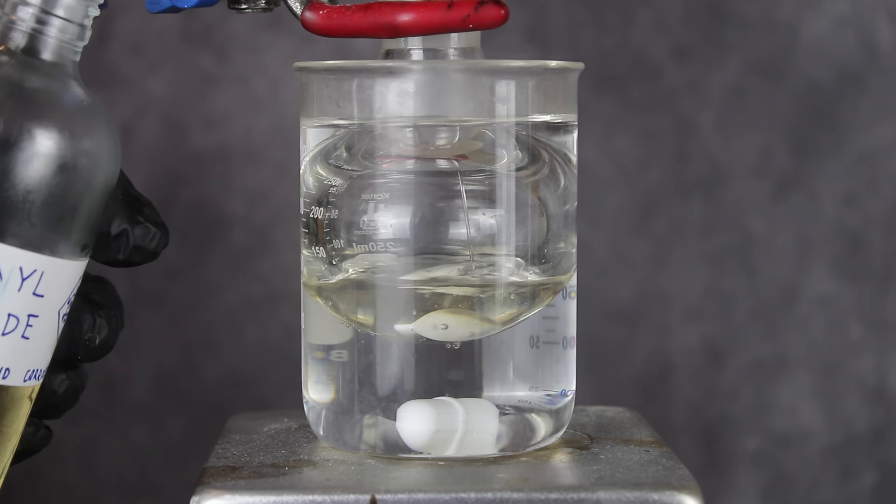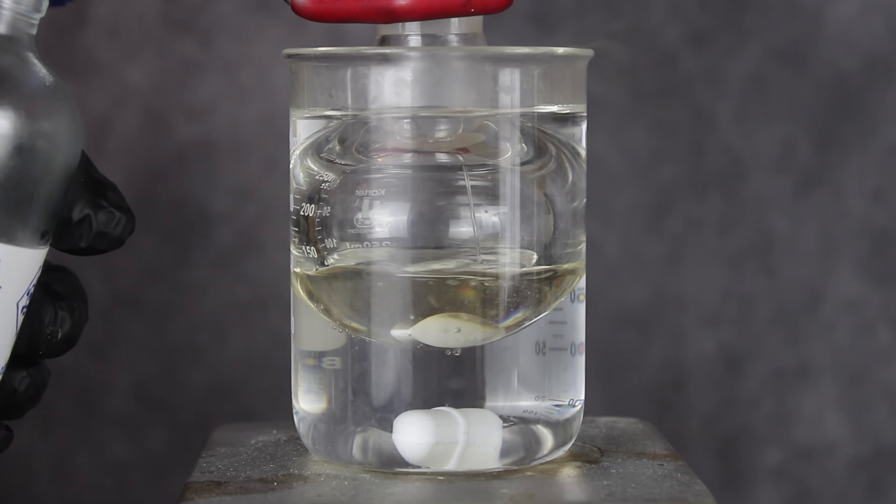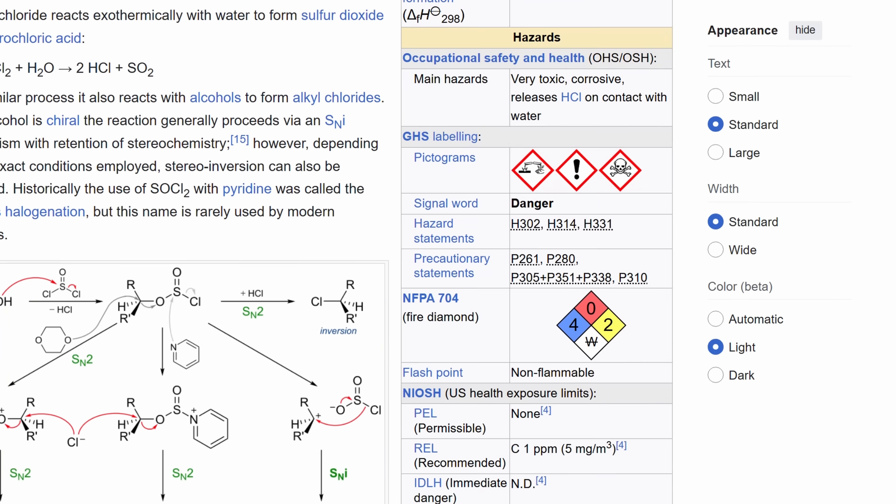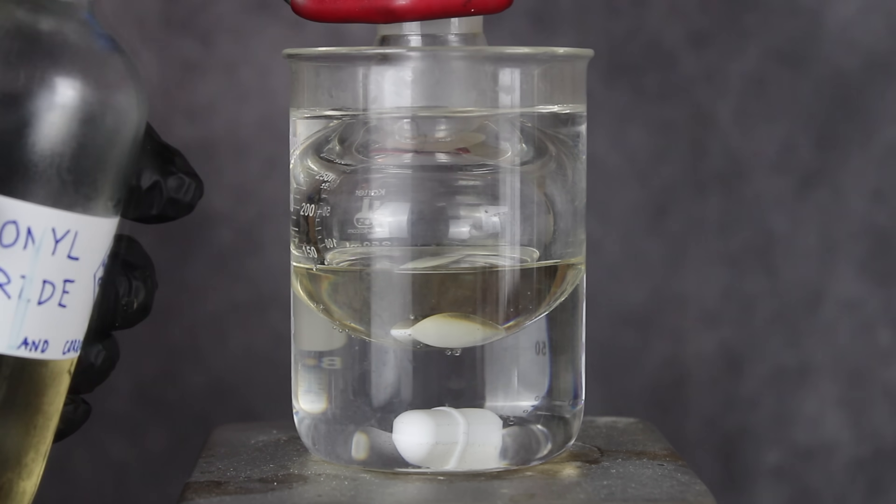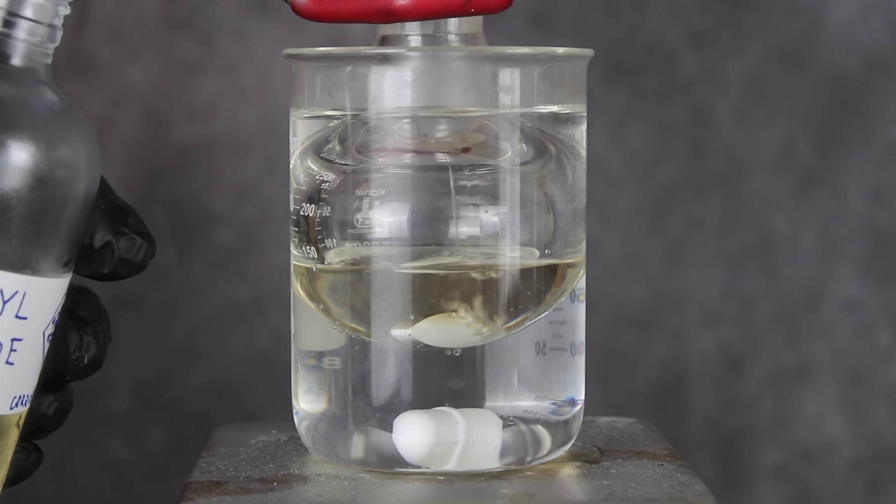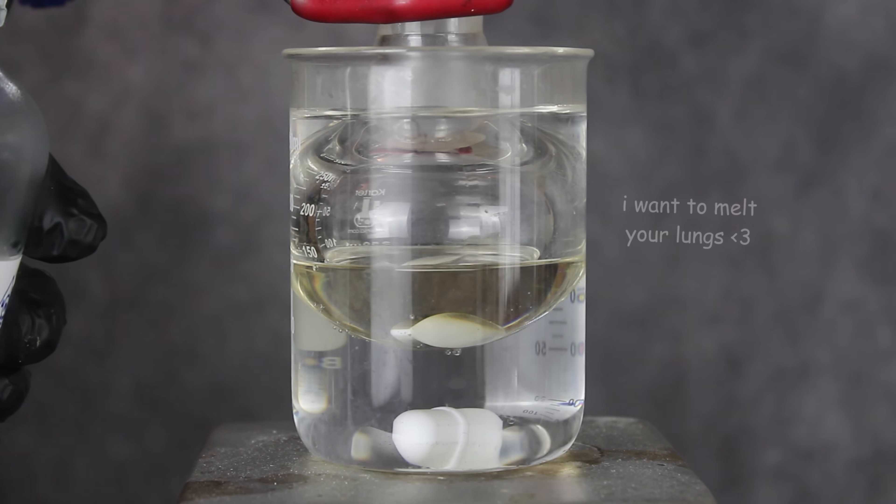To make it, I first loaded a 50ml flask with 20ml of cold thionyl chloride. This stuff is honestly pretty nasty, so if for some reason you decide to do this yourself, remember to use proper gloves, eyewear, and breathing protection. A fume hood would also be a good idea, since a lot of toxic and corrosive fumes tend to be produced.